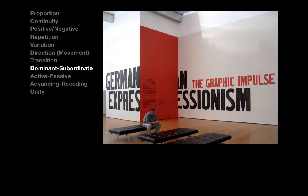Dominant and subordinate qualities have been previously discussed in the topic of direction, but the discussion goes well beyond issues dealing with direction and movement. It's more akin to proportion, because in the end, dominant and subordinate qualities are all about the relative amounts used.